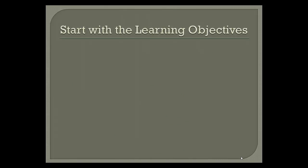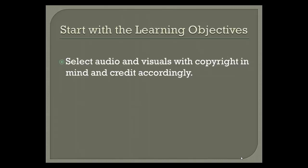The first thing you want to do when adding audiovisuals is to start with your learning objective. Decide if the content you are teaching would be better enhanced with visual images, a sound, a drawing, some cartoons, or a video clip. You want to select audiovisual materials that respect the copyright of others. Now they have Creative Commons licenses.